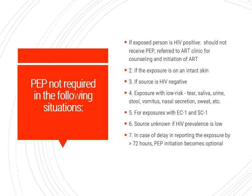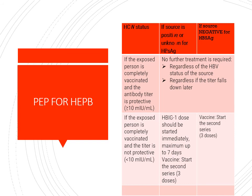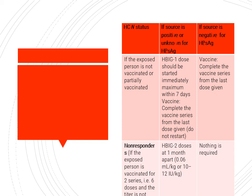For Hepatitis B PEP, it depends on whether the exposed person has been vaccinated. If vaccinated and the antibody titer is more than 10 IU/L, no action is needed regardless of source status. If vaccinated but titer is less than 10 and the source is negative, give a booster vaccine. If the source is positive or unknown, give one immunoglobulin dose plus a vaccine to neutralize any virus that may have entered the body. If the exposed person is unvaccinated or partially vaccinated and the source is positive, give both immunoglobulin and vaccine; if the source is negative, complete the vaccine course.